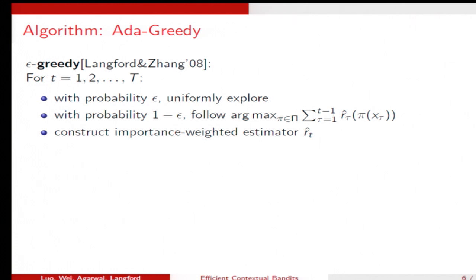This is the Epsilon greedy algorithm. This is very simple. In every round, with probability epsilon, you do uniform exploration over actions. With probability one minus epsilon, you follow the leader. And you construct some importance weighted estimator feedback and feedback to the algorithm.